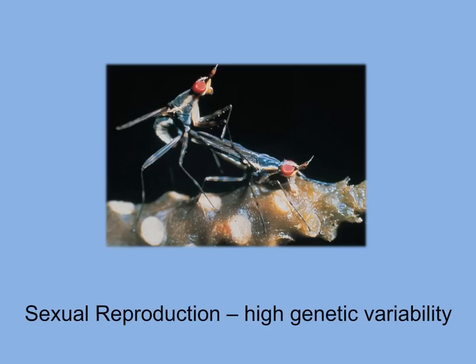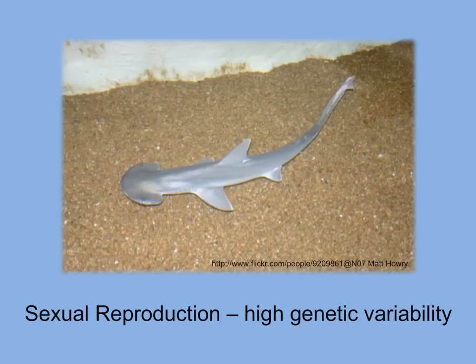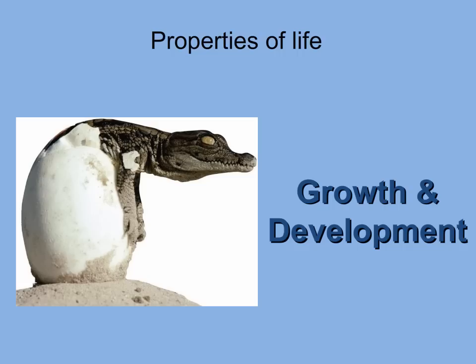In sexual reproduction, two parents contribute genetic information in the form of gametes, or sex cells. The gametes fuse and an offspring is produced from the fertilized egg; therefore, the resulting offspring has a unique genetic structure. The bonnethead shark only reproduces asexually if females cannot find mates; otherwise, they will undergo sexual reproduction.